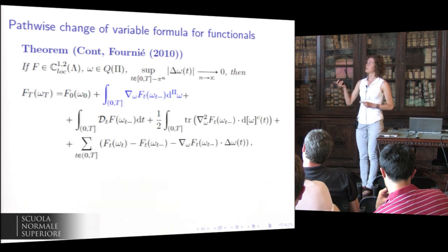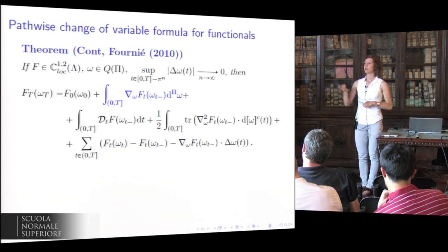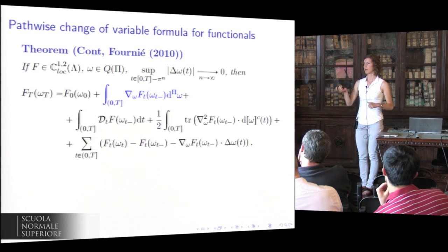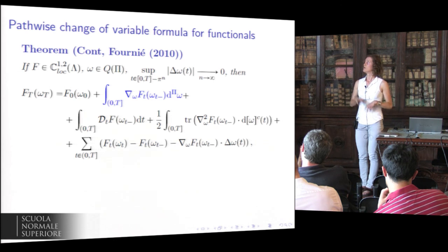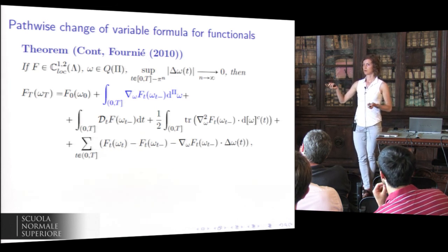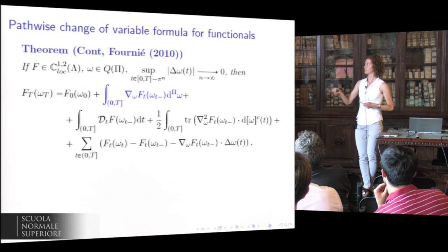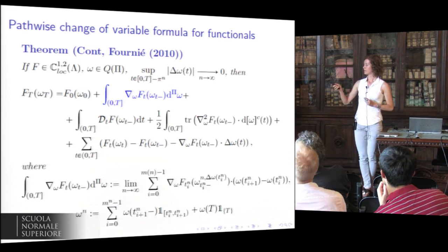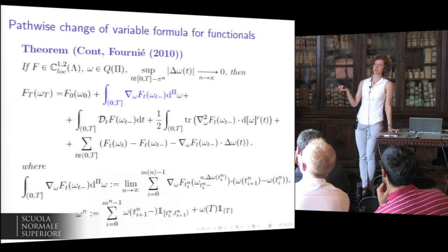The basic result we exploit is the functional Ito formula, which extends the classical Ito formula to functionals — not just functions of the current state of the process, but functionals of the whole path up to a certain time. Moreover, this is a pathwise formula: the functional is applied to a trajectory, not a stochastic process. The formula is exactly the same as the one we know from stochastic calculus. The integral that appears is called the Föllmer integral, defined as the limit of Riemann sums.